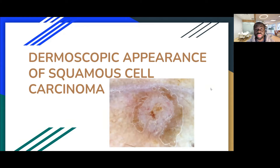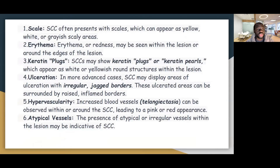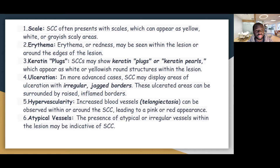How does it look on a dermoscopy? When you place a dermoscope on a squamous cell carcinoma, what are some of those features that could help you support your likely diagnosis? Number one is scale — there could be scaliness of the lesion, since squamous cell carcinomas are keratinizing lesions. You could have keratin plugs or keratin pearls — thickened areas of brownish or blackish keratin plugs or pearls.